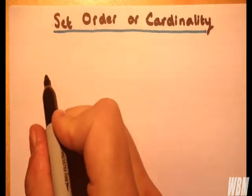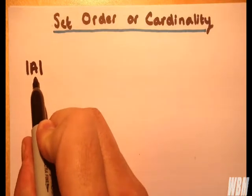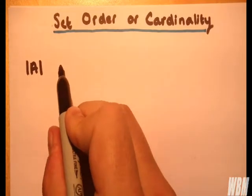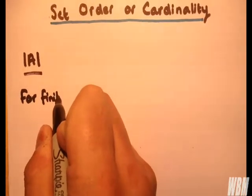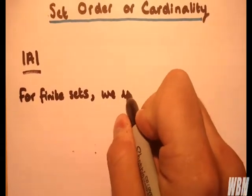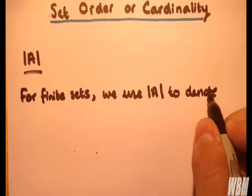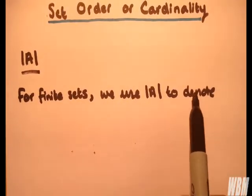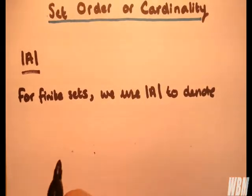Set order or cardinality is represented in the following way. So if we have set A, when we have A represented like this, we're referring to the cardinality or order of A. For finite sets, what we're denoting is the number of elements — that's what order or cardinality is — the number of elements or members, the size of the set.